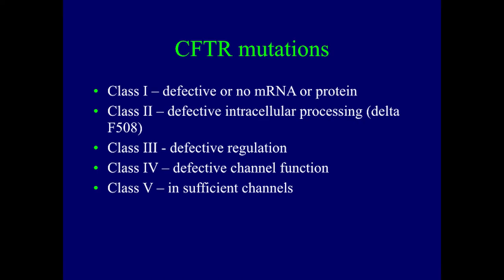Class 2 mutations have defective intracellular processing. The most common example is the F508 mutation — here CFTR is being made, but it folds incorrectly and therefore it's not going to do its job. Class 3, 4, and 5 are other forms that have partial function of CFTR, so there's some function but it's not normal. Depending on the combination of defects you have, that will determine how much CFTR function you have and therefore how at risk you are for the problems resulting in changes in airway secretions.